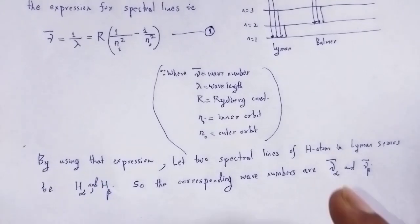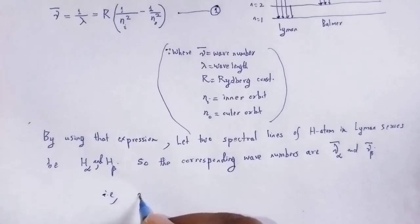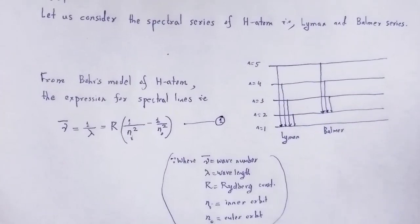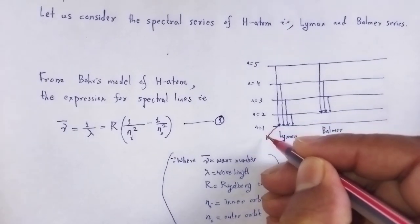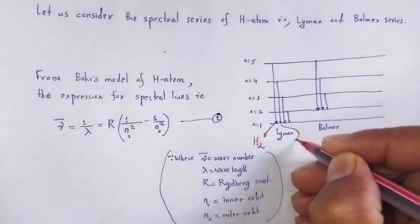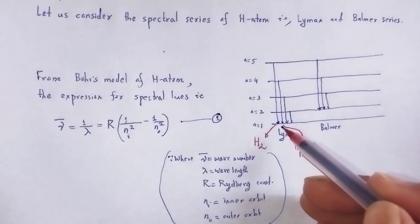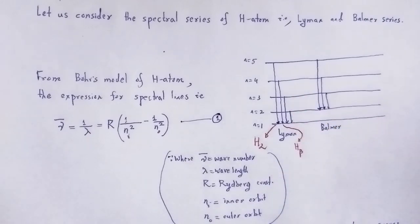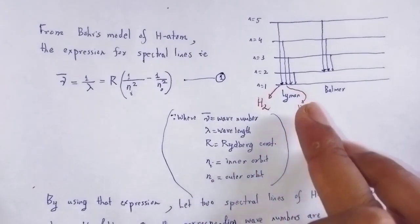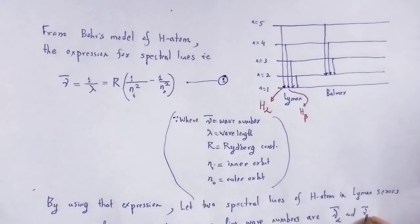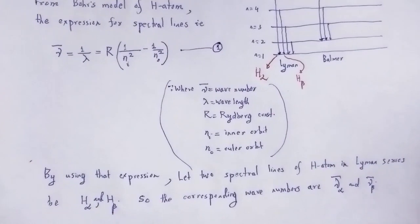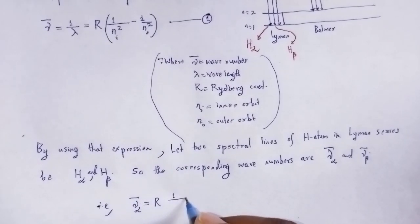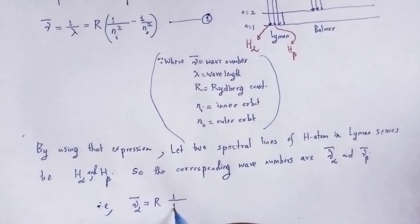For the Lyman series, H-alpha is the first spectral line and H-beta is the second spectral line. The wave number nu-bar-alpha can be determined using the expression with nᵢ equal to 1 and nₒ equal to 2.